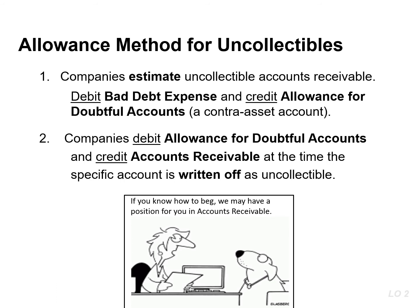When a company determines an account to be uncollectible, it debits allowance for doubtful accounts and credits accounts receivable.